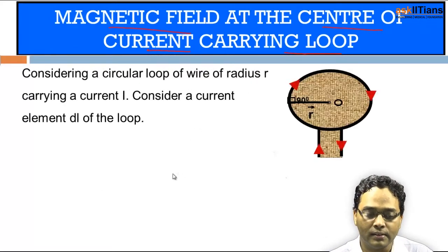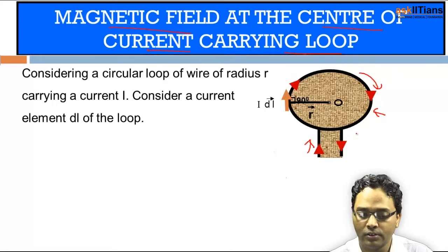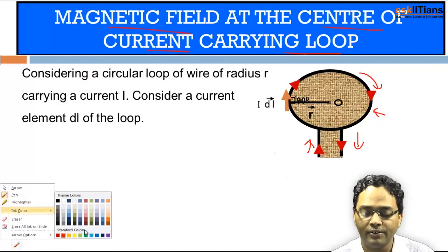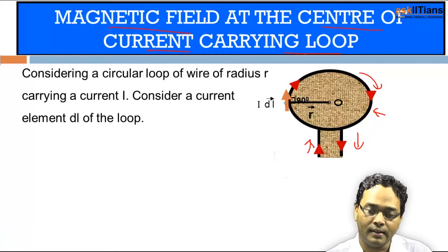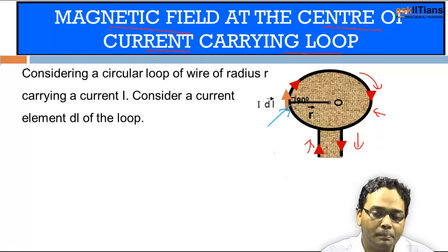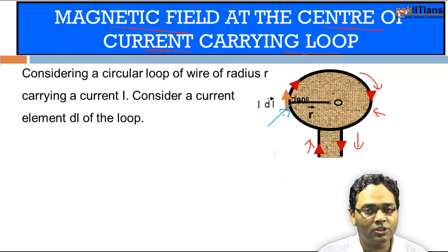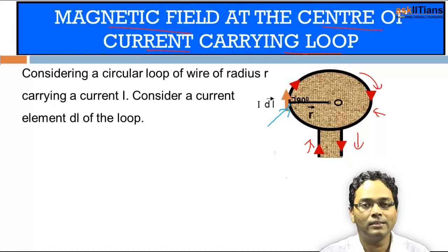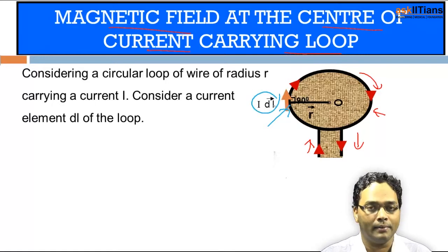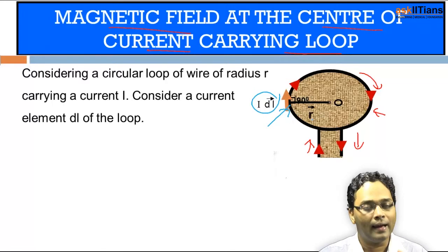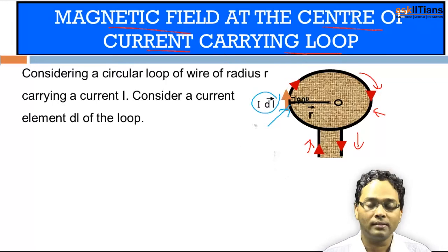Consider a current-carrying loop where the current comes in, moves in a circular path, and comes out. The current direction is tangential and perpendicular to the radius. Since current is not a vector quantity, we associate a current element — how much current is flowing in a very small part of the ring. IDL represents the current element, which is perpendicular to the radial vector.